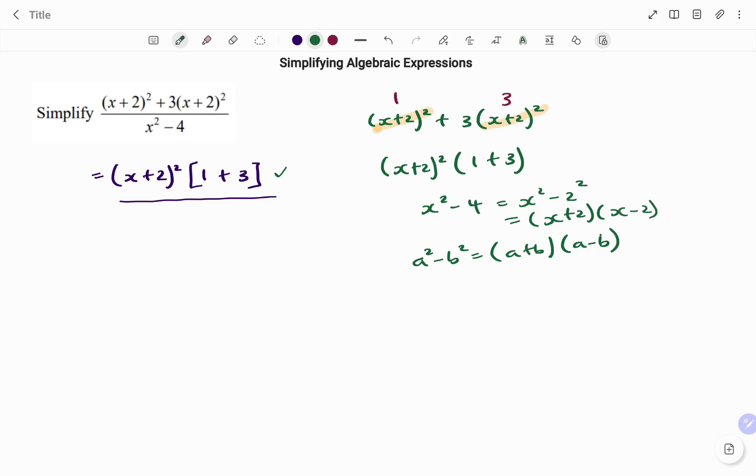So factorizing my denominator, I have (x plus 2) squared multiplying 1 plus 3, that's 4, divided by (x plus 2)(x minus 2).